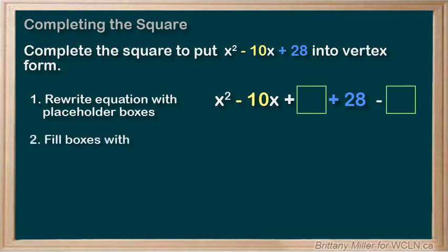Step 2. What goes in the box? It's always going to be b divided by 2 squared. So b in this quadratic is negative 10. Negative 10 divided by 2 equals negative 5. We square that to get 25. So 25 goes in both of our boxes.